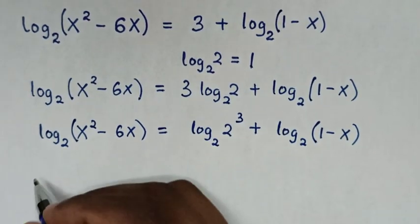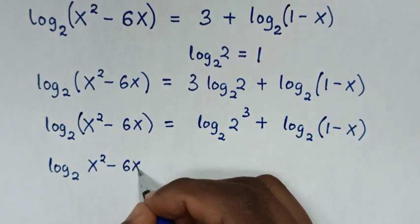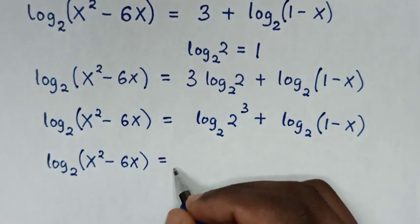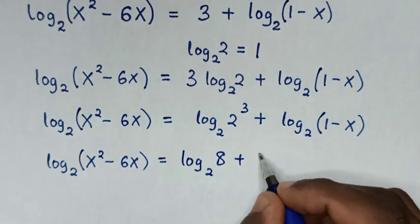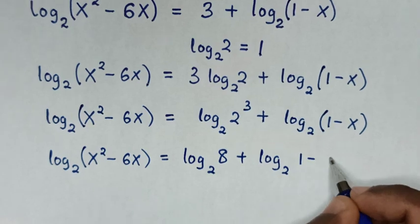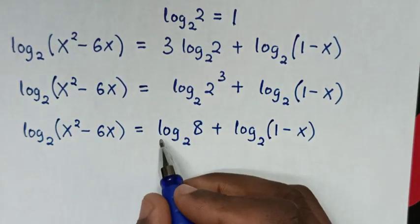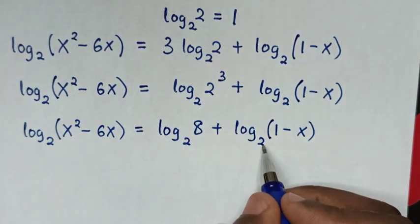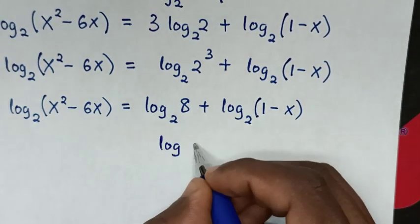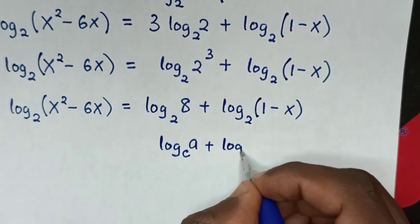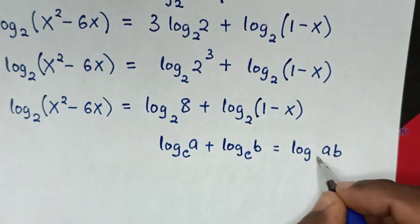Then our equation will be log base 2 of (x² - 6x) equals log base 2 of 8, plus log base 2 of (1 - x). From the right side, we'll apply the logarithmic rule: log_c(a) + log_c(b) = log_c(a × b).